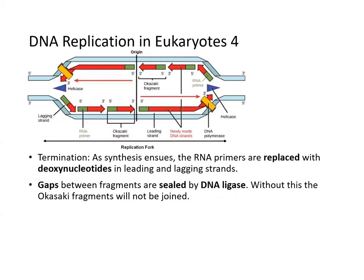During termination, the RNA primers are replaced with deoxyribonucleotides in both leading and lagging strands. The RNA primers are excised and replaced with DNA, but the fragments are not covalently joined — there are gaps. These gaps must be sealed by an enzyme called DNA ligase. Without DNA ligase, Okazaki fragments cannot be joined.